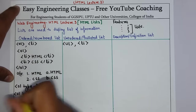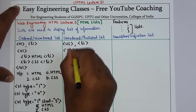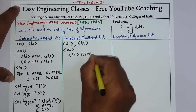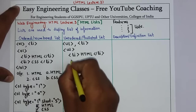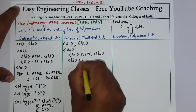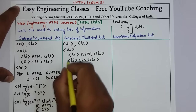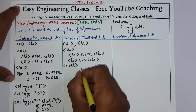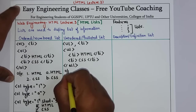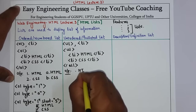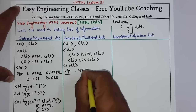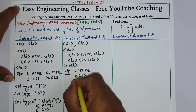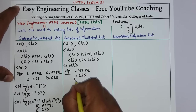Now if we are going to the unordered form, we write UL, then the list items using LI — for example, LI HTML, LI CSS — and then close the UL tag. The output will be like: dot HTML, dot CSS. This is in the form of a bulleted list.